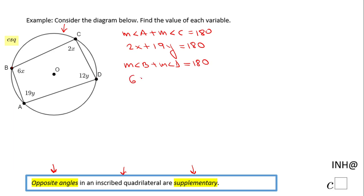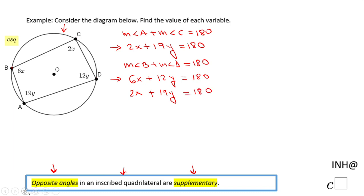That means 6X plus 12Y equals 180. So now we have two equations and two variables — we need to find X and Y. The first equation is 2X plus 19Y equals 180, and the easiest way to solve this system of equations is to multiply the second equation by negative 3.